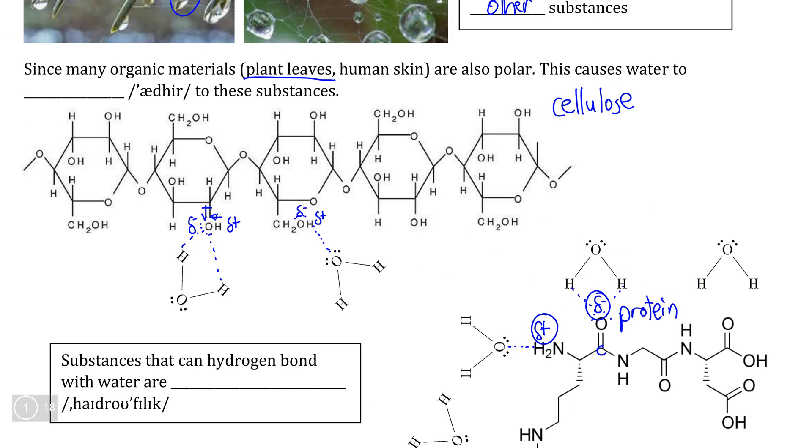So because both cellulose and silk protein are polar substances, water can adhere, this is the verb form of adhesion, to each of these substances by forming hydrogen bonds.